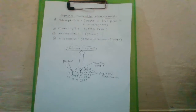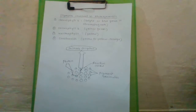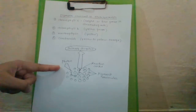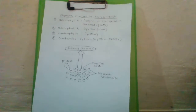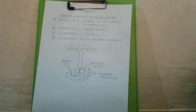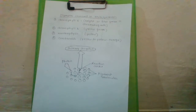Now we will discuss the light reaction in detail. The light reaction or photochemical phase includes: light absorption, water splitting, oxygen release, and formation of high energy chemical intermediates ATP and NADPH. The membrane system functions to trap light energy and carry out synthesis of ATP and NADPH.